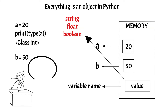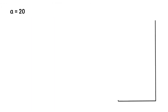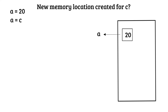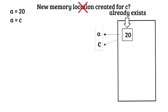Now let us dig inside this concept a little further. We currently have variable A assigned with the value 20. So if we write C equals A, in this case, whether a new memory location will be created for C? The answer is no. As the value 20 already exists in the memory, this value will be referenced to C. So now the value 20 will be referenced to both the variable names A and C. Due to this, memory consumption is optimized in Python.